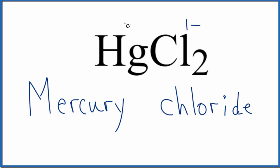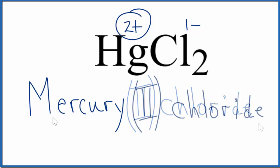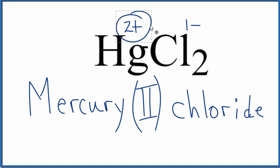Since we have two of those, the mercury has to be two plus for all this to give us a net charge of zero. This two plus here, we write a roman numeral two between the mercury and the chloride, and that makes the name for HgCl2 mercury two chloride. And the two is because of our two plus up here.